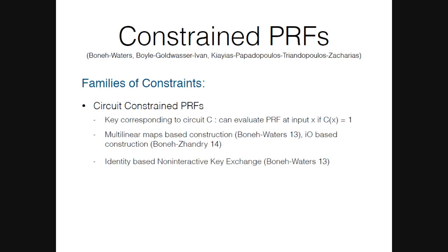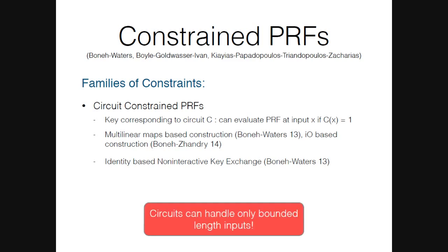Boneh and Waters showed a multilinear-maps-based construction for bit-fixing. Boneh and Waters also showed circuit constrained PRFs using multilinear maps, and later Boneh and Zhandry showed an IO-based construction. This has direct applications in identity-based non-interactive key exchange, and combined with IO also gives traitor tracing. However, circuits have one major restriction: they can only handle bounded-length inputs, meaning the identity-based non-interactive key exchange scheme can only work for an a priori bounded number of users.